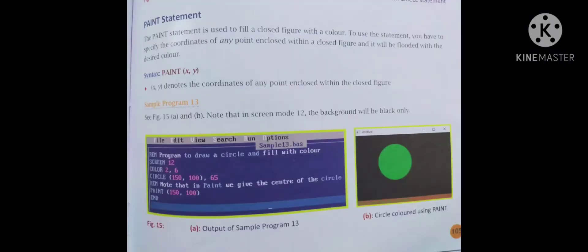The PAINT statement is used to fill a closed figure with a color. Specify the coordinates of any point inside the closed figure and it will be flooded with the desired color. Syntax: PAINT (x, y), color code. Sample program: SCREEN 12, COLOR 2, 6. CIRCLE (150,100), 65 draws the circle outline. Then PAINT (150,100) fills the center. The output shows a circle filled with color using the PAINT statement.